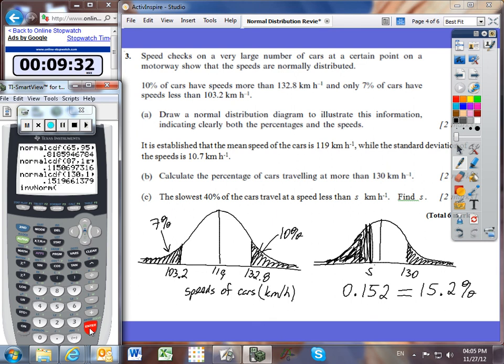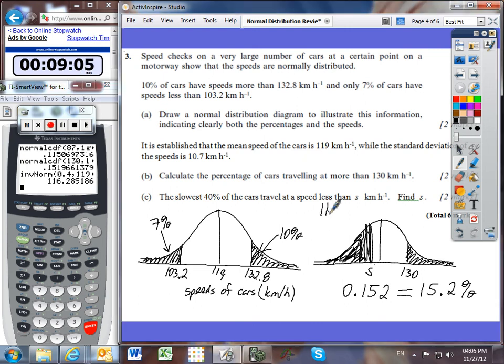And I can just go ahead and type in 0.4, because I am looking for the region less than. So it's 40% is less than, it's put in 0.4, and once again we know that the mean is 119, and the standard deviation is 10.7. And we get 116.28. If we round it to three significant figures, then we'd have a speed of 116 kilometers per hour. And so that's going to be your value of S when we round it to three significant figures. And it never hurts to show your work by actually writing down that you did use the inverse normal function with 0.4, 119, and 10.7.